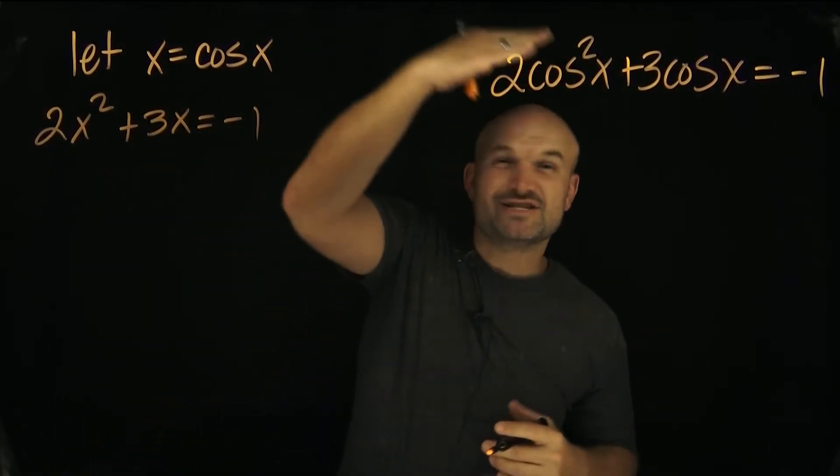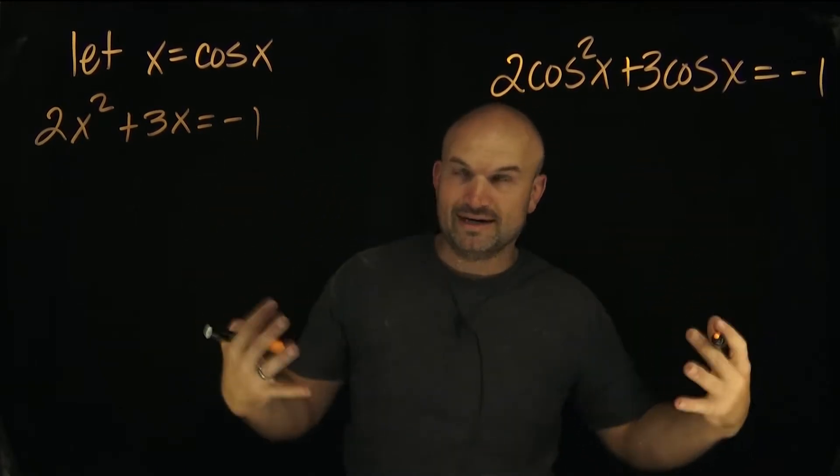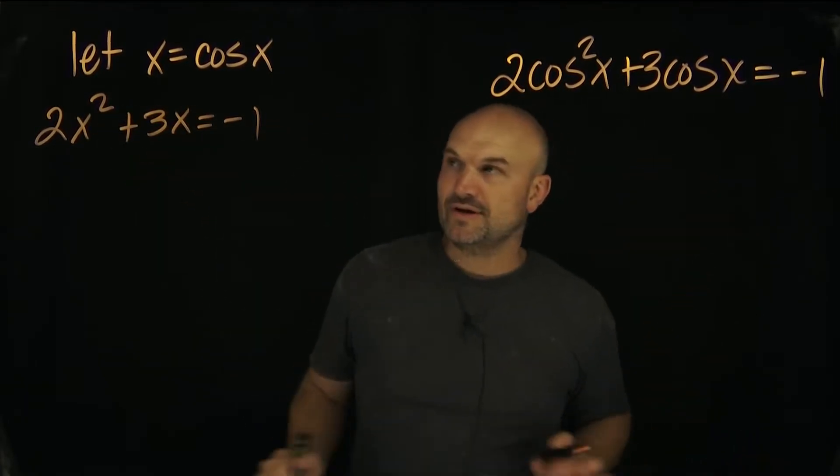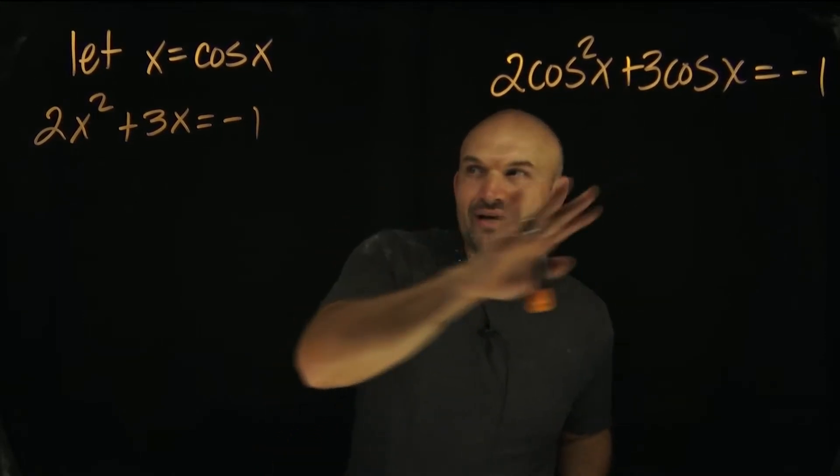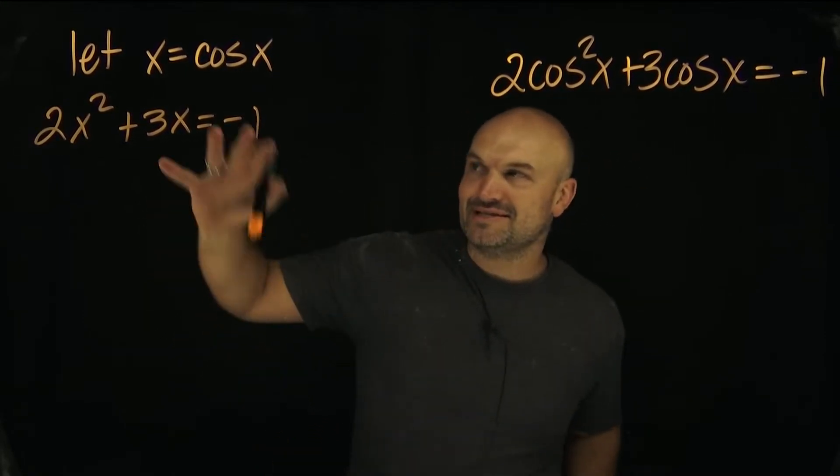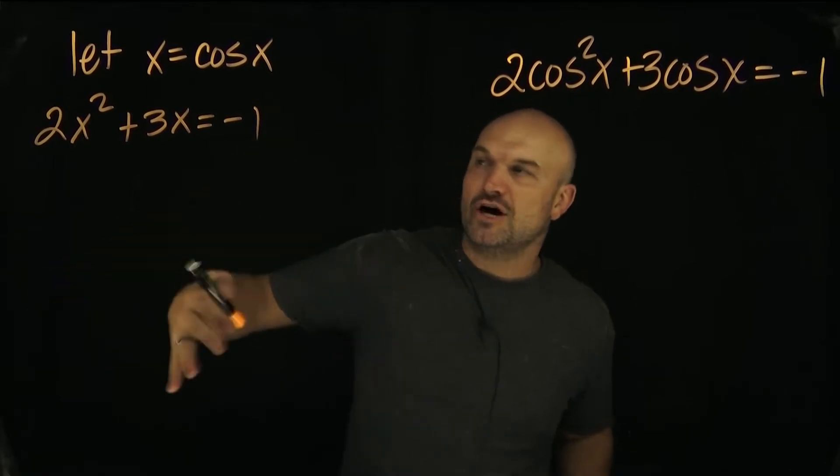All right. So remember, that's a cosine squared. That's the same thing as cosine of x quantity squared, right? So that's why it's an x squared there. And now you can see we have a basic algebra 1 problem, guys, right? Even though we're doing trig, it's an algebra 1. This is just a typical solve the quadratic.